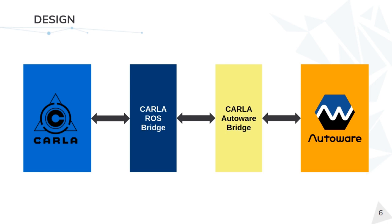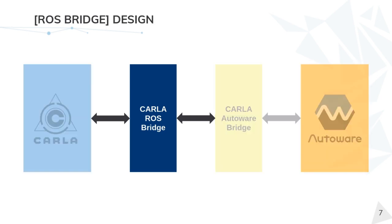The ROS bridge is responsible for exposing all the functionality of Carla to the ROS environment. With this component it is possible, for instance, to spawn an ego vehicle in Carla through ROS, subscribe to a bunch of topics regarding sensor data, or modify the weather in Carla, among other utilities. In this presentation we are going to focus on the parts of the ROS bridge needed to run the integration between Carla and Autoware.